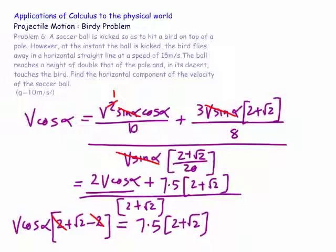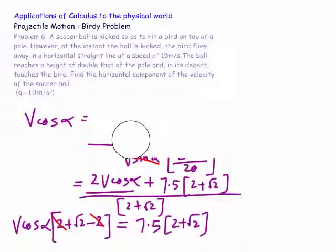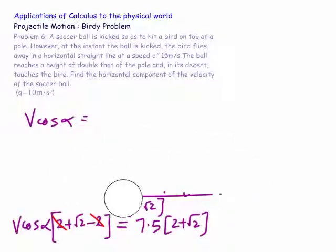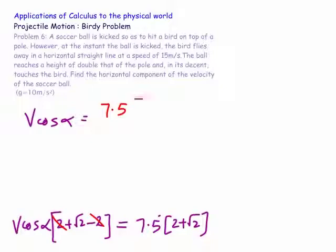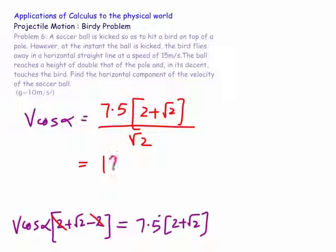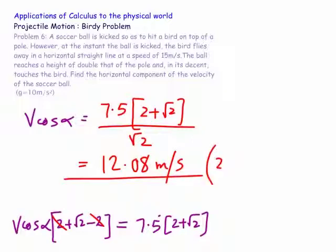So v cos alpha simplifies to 7.5 times (2 plus root 2) over root 2, which works out to be approximately 12.08 metres per second to 2 decimal places.